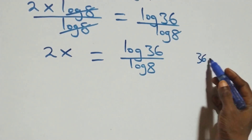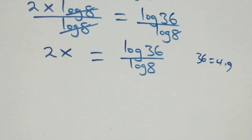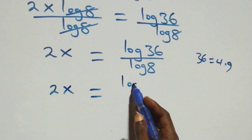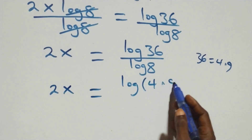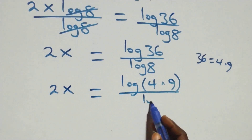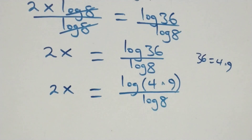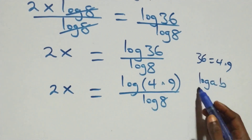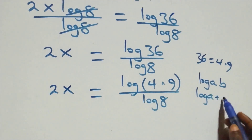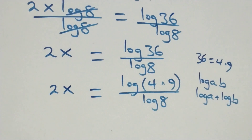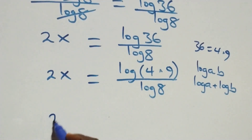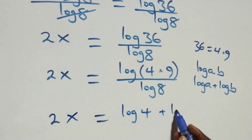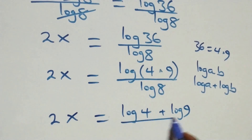The next step: we can express 36 as 4 times 9. So what we have becomes 2x equals log(4 times 9) over log 8. Applying the logarithm product rule — log(A times B) is the same thing as log A plus log B — all we have becomes 2x equals log 4 plus log 9, all over log 8.